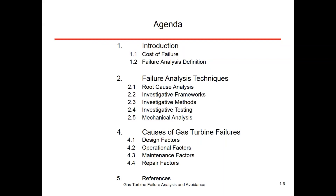We'll also look at some of the mechanical analysis that's often used to support failure analysis. We'll talk about causes of gas turbine failures — the numbering systems are a little bit out of whack because this is a pared-down version of the course. We'll look at design factors — why turbines are designed to fail, so to speak — how they operate to failure, maintenance factors, and repair factors. Lastly, we'll go through references, standard tests, and web references for more information going forward.